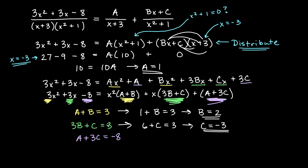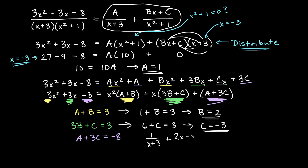Now we simply plug A = 1, B = 2, C = -3 into our partial fraction form. The partial fraction decomposition is 1/(x + 3) + (2x - 3)/(x² + 1). Comparing coefficients is a backup method when you're unable to set all factors equal to zero — for example, with repeated factors or irreducible quadratics. This is the method you'll use when you can't get all your unknowns directly. Hopefully this helps with comparing coefficients and partial fractions!